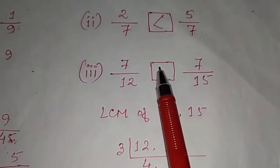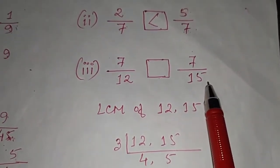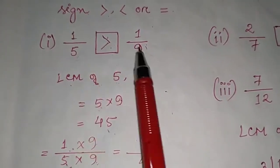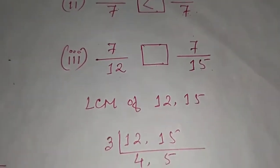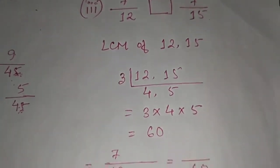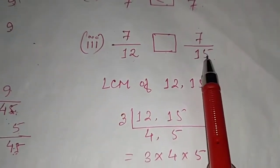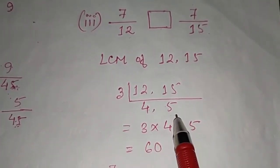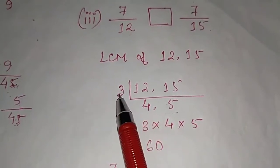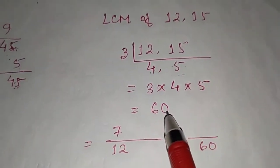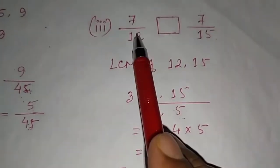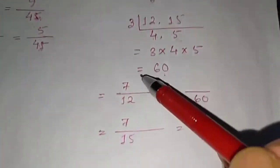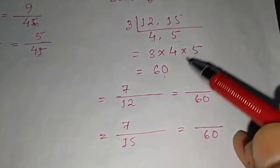Number 3: compare 7/12 and 7/15. The denominators 12 and 15 are different, so we take the LCM of 12 and 15. Factoring: 3×4 = 12, 3×5 = 15, with no other common factors. So LCM = 3 × 4 × 5 = 60. We must now make both denominators 60.